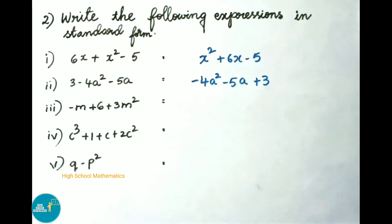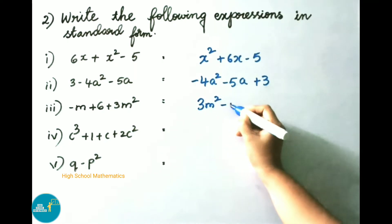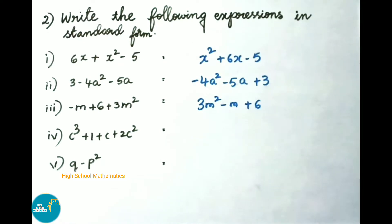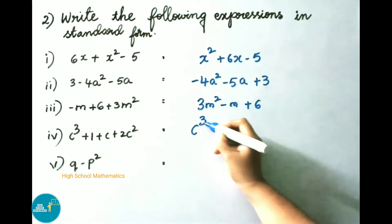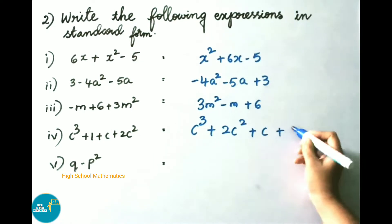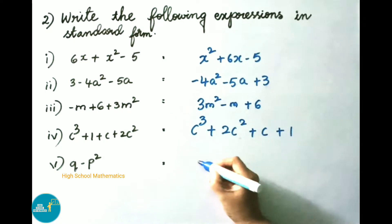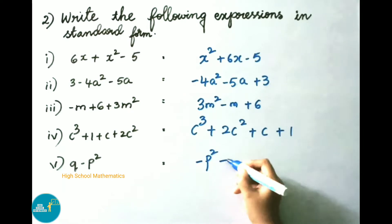See now the third one: minus m plus 6. The fourth one is c cube plus 1 plus c plus 2c square; in standard form it is c cube plus 2c square plus c plus 1. The fifth one is q minus p square; in standard form it is minus p square plus q.